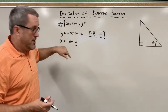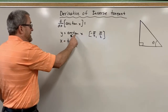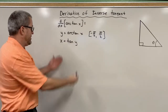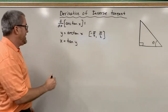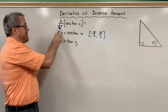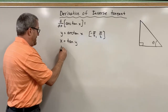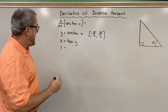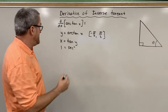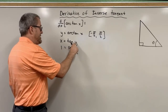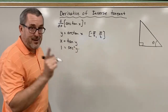This second statement is better for us because we know how to take the derivative of tangent of x, whereas we don't know how to take the derivative of arc tangent — that's the goal. So we're going to implicitly differentiate both sides of this equation with respect to x. The derivative of x with respect to x is 1. The derivative of tangent with respect to x is secant squared, and the chain rule in this implicit differentiation gives us secant squared of y times dy/dx.